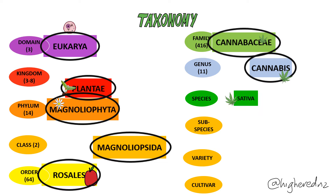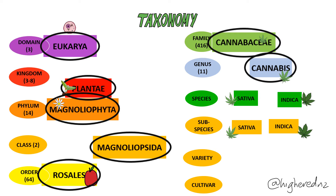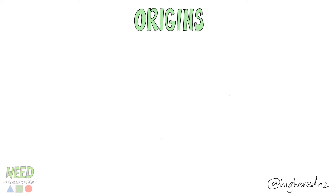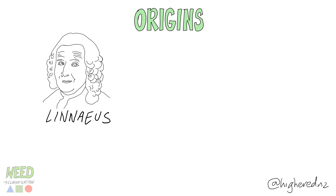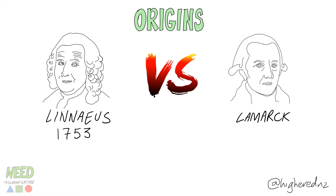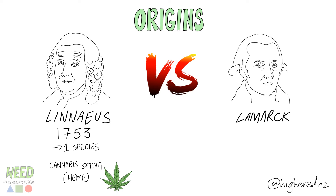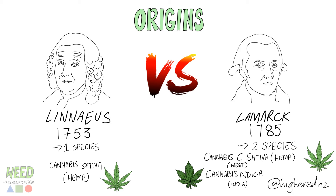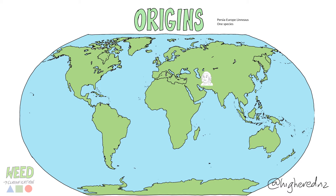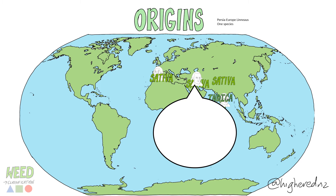Now is where the debate begins. Cannabis can either be split into different species — sativa and indica — or sativa can be the only species, with sativa and indica being subspecies. Underneath we have variety and then cultivar. Where did sativa and indica originate from? This comes down to Linnaeus vs. Lamarck. Linnaeus was a famous botanical taxonomist who in 1753 classified one species of cannabis — Cannabis sativa — when looking at hemp-type species. Lamarck, on the other hand, in 1785 said there are in fact two different species: Cannabis sativa from the west and Cannabis indica from India, which he classed as a psychoactive type. Linnaeus hypothesized that Cannabis sativa was from Persia (now Iran) and dispersed through to Europe, while Lamarck believed Cannabis indica came from India. Fossil pollen studies show that Cannabis sativa actually probably originated from the Tibetan Plateau in China.